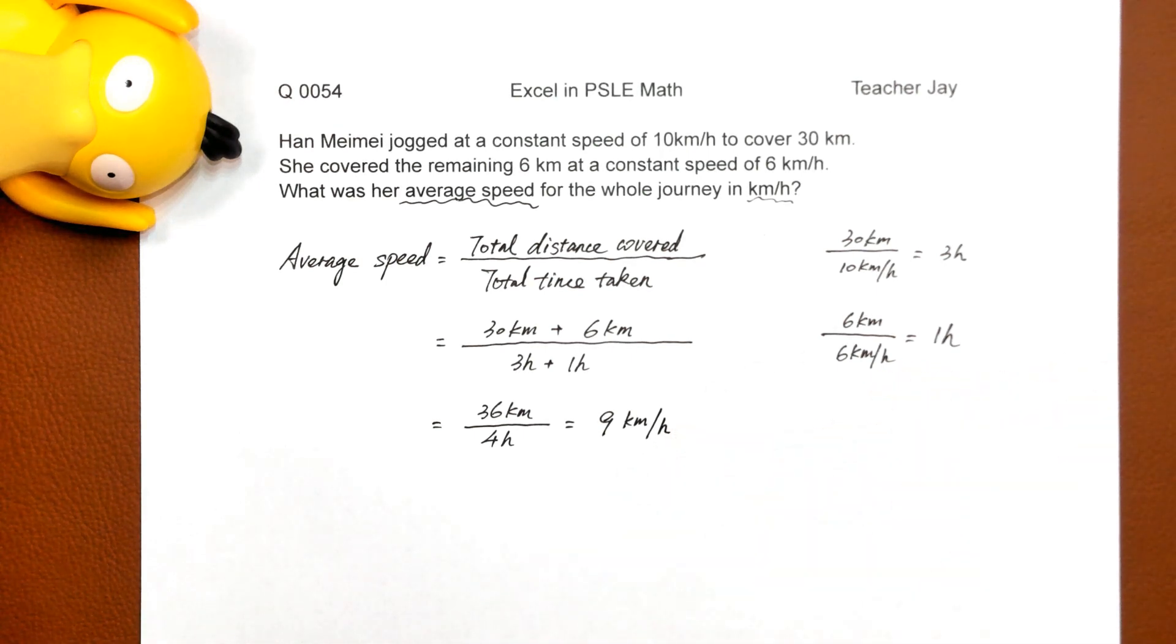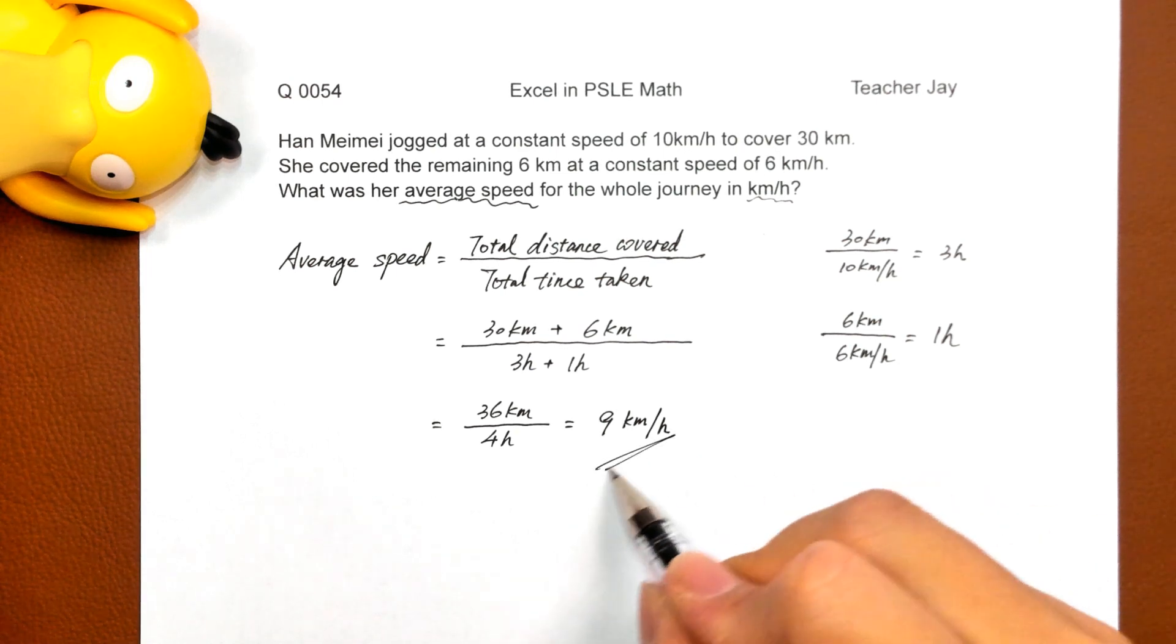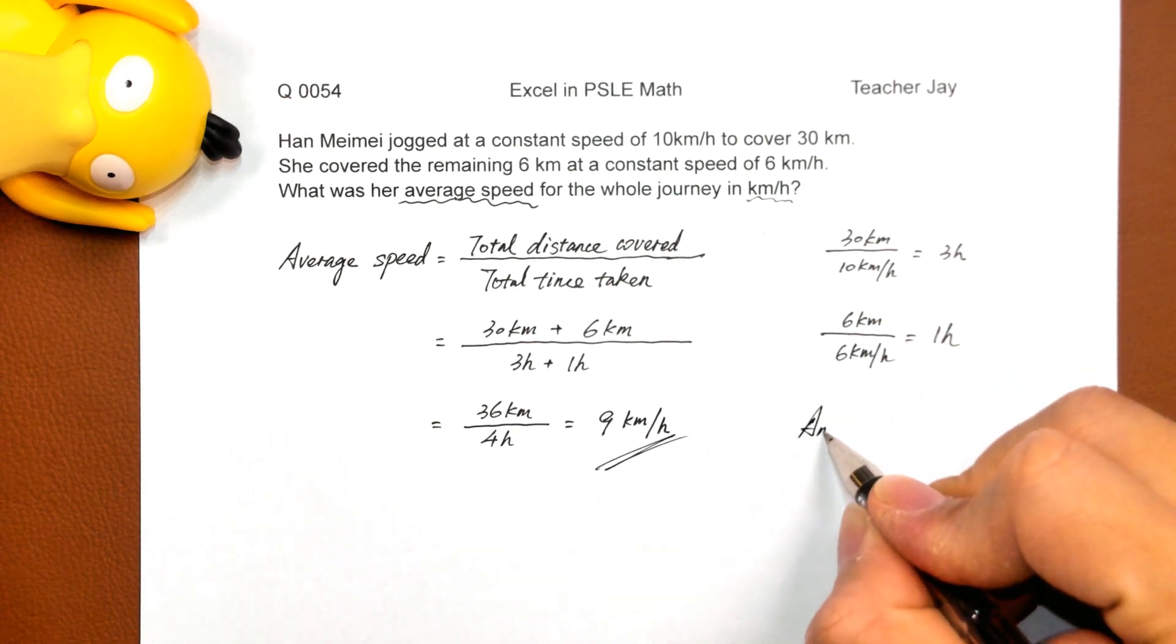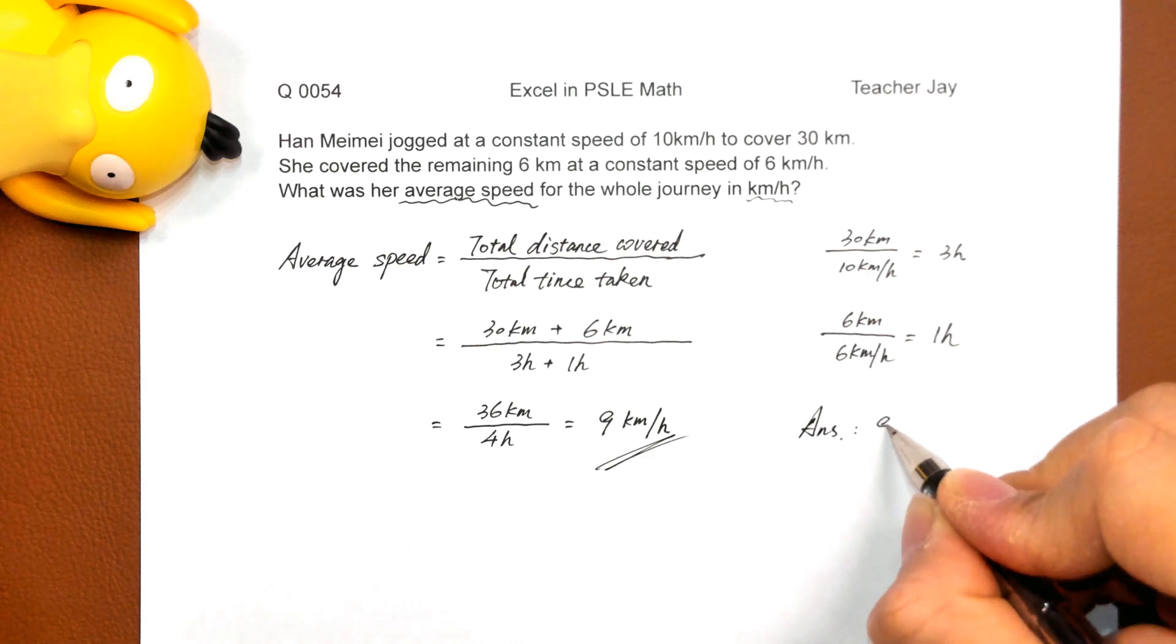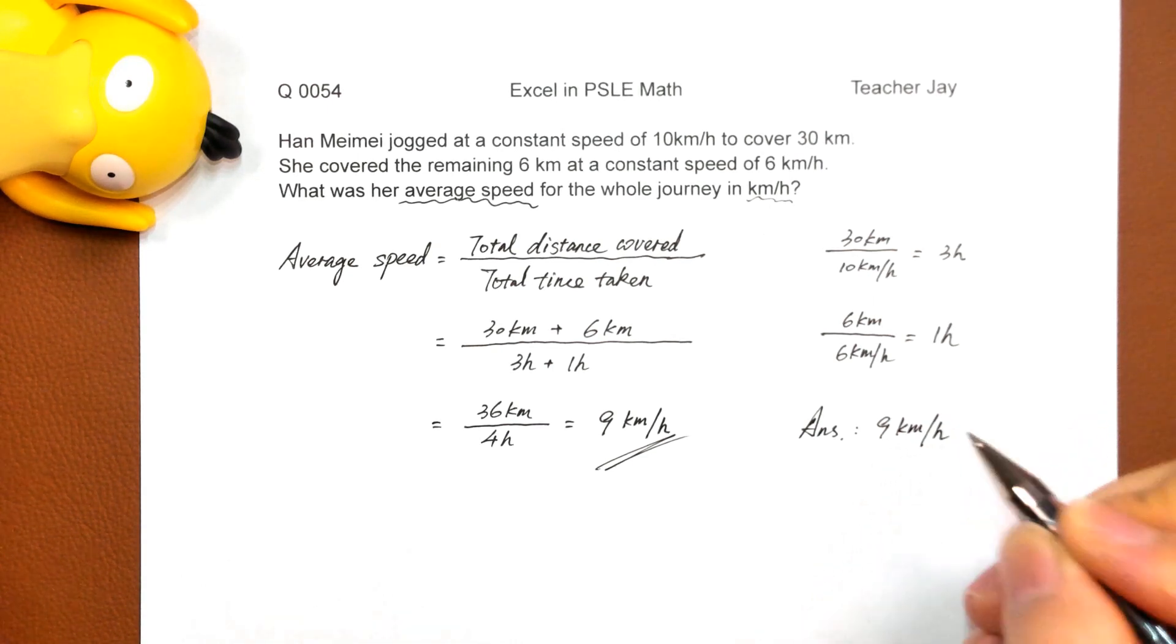九个千米每小时。这就是我们的答案了。The answer here. Nine kilometers per hour.